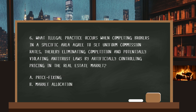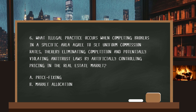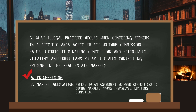Number six. What illegal practice occurs when competing brokers in a specific area agree to set uniform commission rates, thereby eliminating competition and potentially violating antitrust laws by artificially controlling pricing in the real estate market? The answer: price fixing. Market allocation refers to an agreement between competitors to divide markets among themselves, limiting competition.